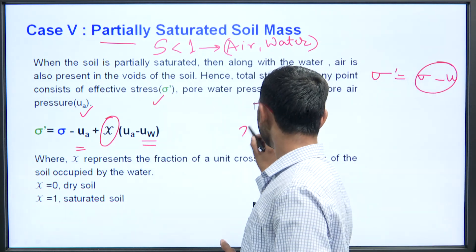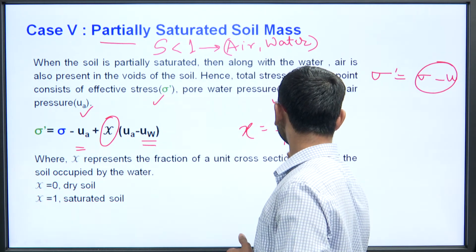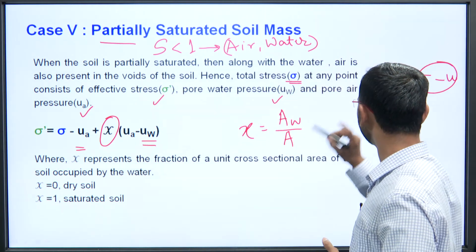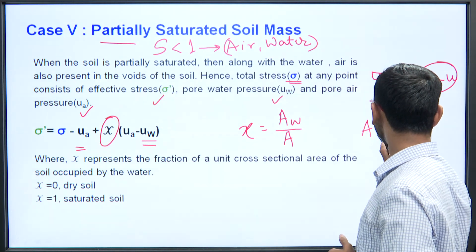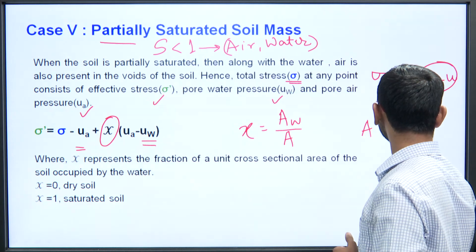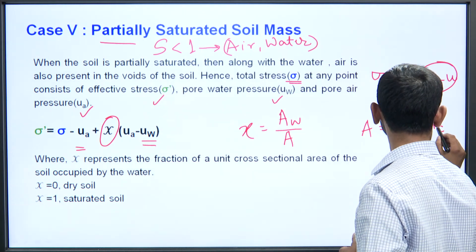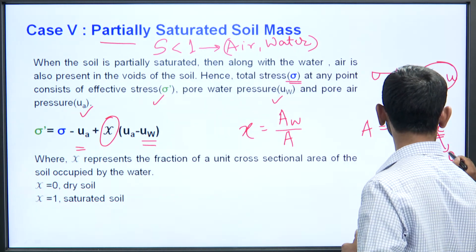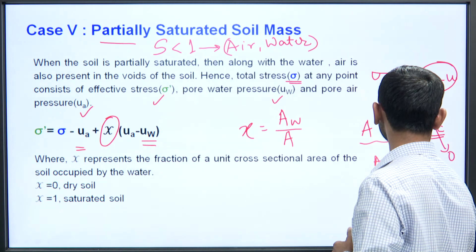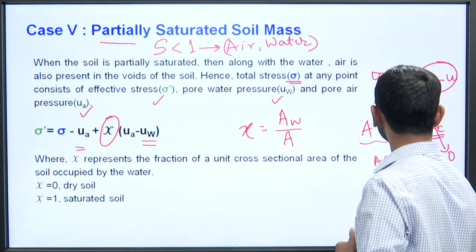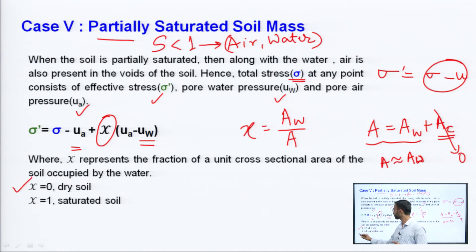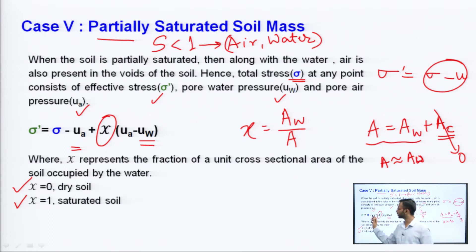The chi (χ) factor represents the fraction of a unit cross-sectional area of the soil occupied by water: χ = A_w / A_total. When χ = 0, the soil is dry; when χ = 1, the soil is fully saturated. For partially saturated soils, we must take into consideration pore air pressure along with pore water pressure.